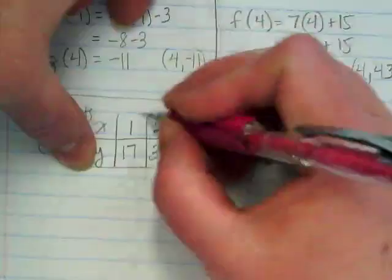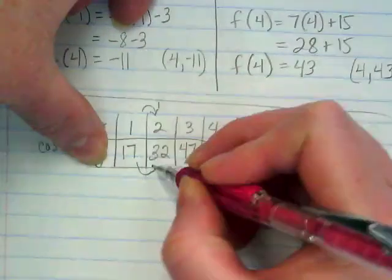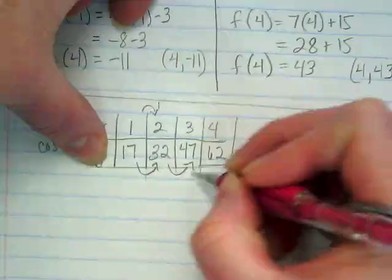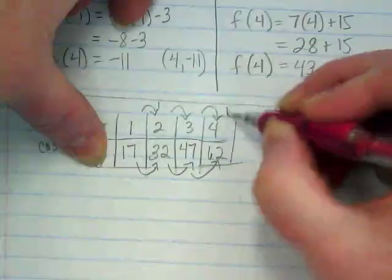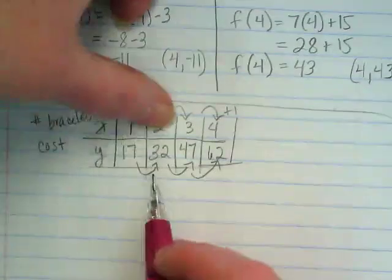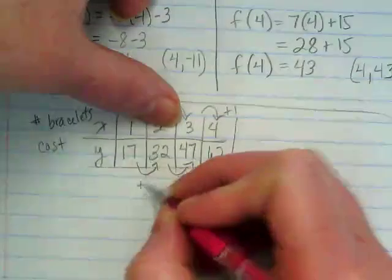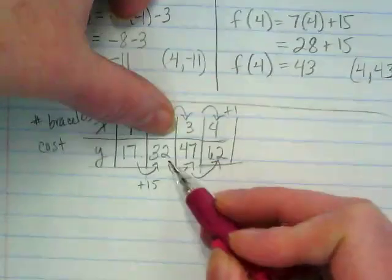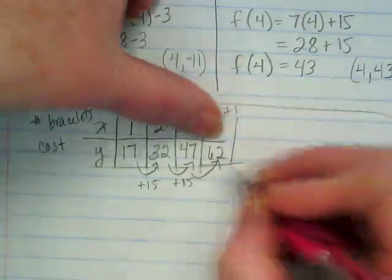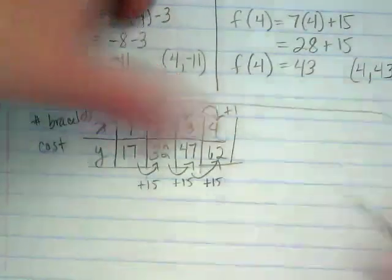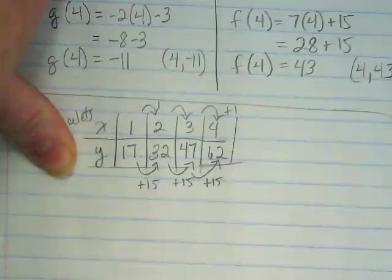But what's the pattern in the y's? They're not going up by the same amount from zero to here. But from here to here, and here to here, and here to here, there is a constant. How much is the difference between $17 and $32? It's $15. What's the difference between $32 and $47? $15. And it's also $15 here. So what we're finding is we have a constant. After we bought the first bracelet, it's going up by $15.